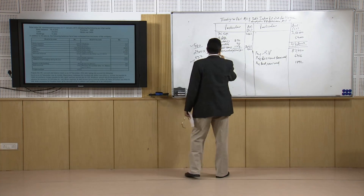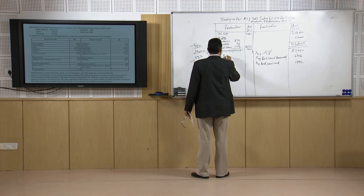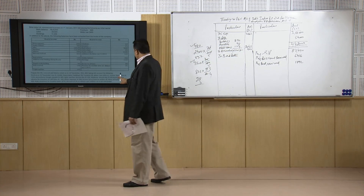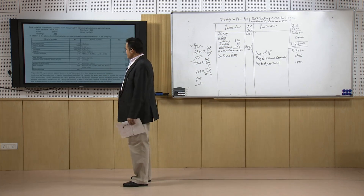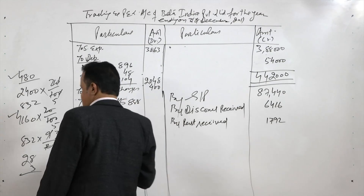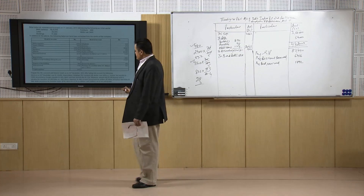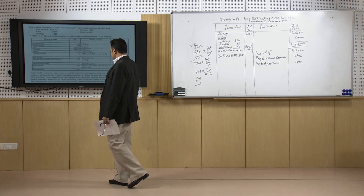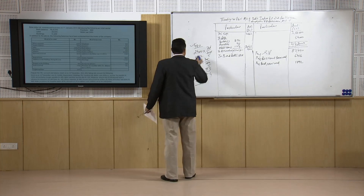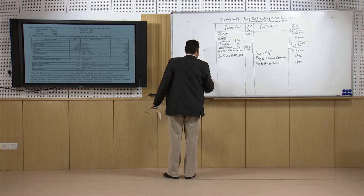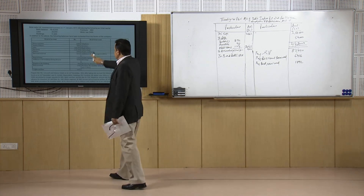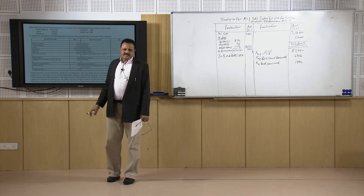Now we take care of the bad debts. Further bad debts written off are 888 rupees. This is the total amount that has really become bad debts. We also need to make provisions for doubtful debts at the rate of 5 percent. The total amount of sundry debtors is 7,888 rupees.